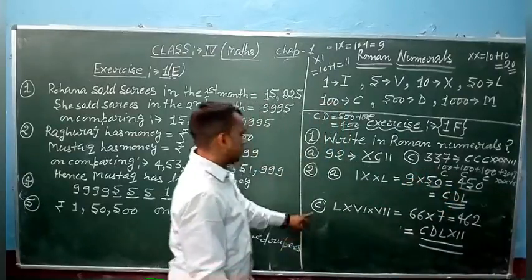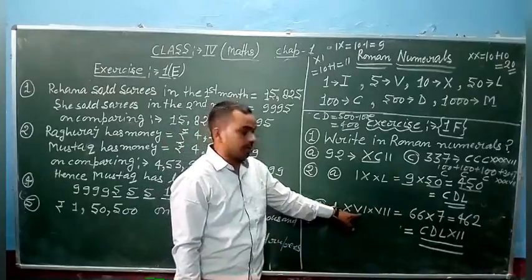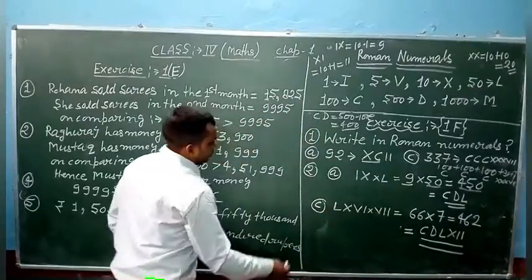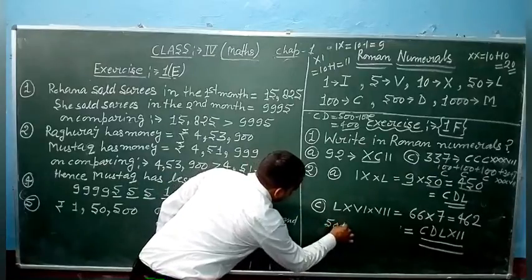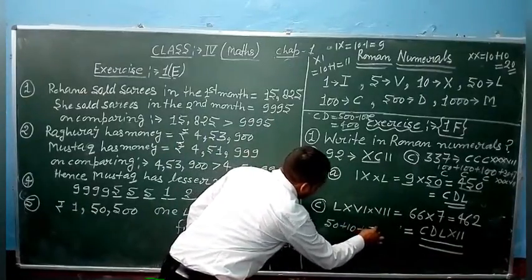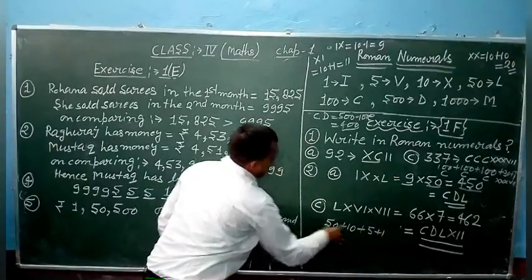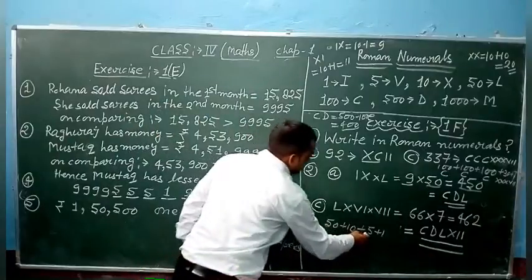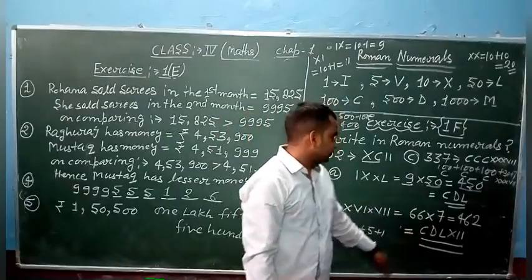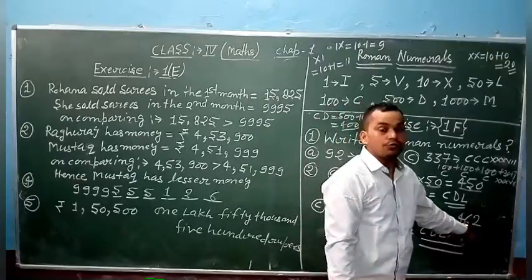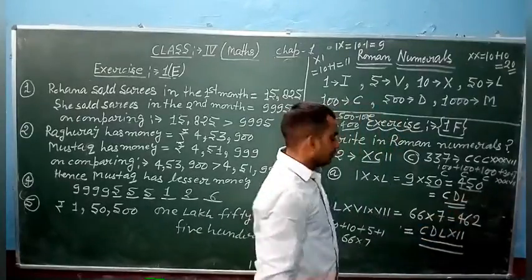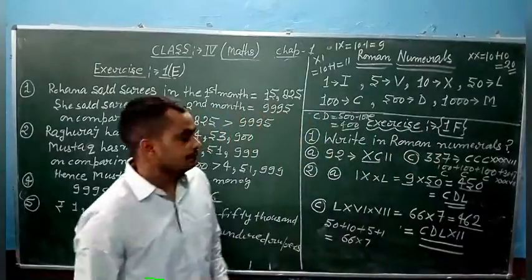If you can see, CD is 500 minus 100 equals 400. CD for 400 and L for 50. That is 450: CDL. Next, LXVI into VII. LXVI: L means 50, X means 10, VI means 5 plus 1. That is equal to 50 plus 10 plus 5 plus 1 equals 66. 66 into 7. 6 into 7 is 42, carry 4. 7 into 6 is 42 plus 4 is 46. We have 462.